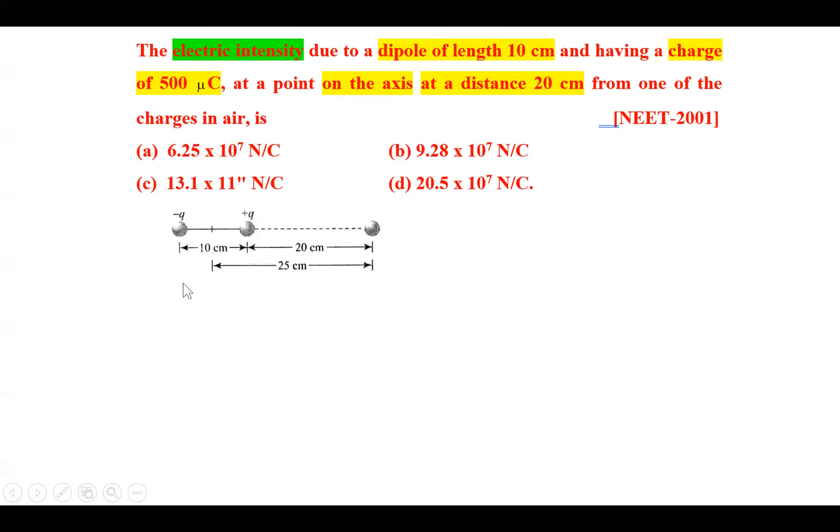Now the situation: the dipole length is 10 cm. We consider the point on the axis of the dipole at 20 cm from this positive charge. This means the point where we need to find electric field intensity is 25 cm away from the dipole's center. We have to find the electric field intensity at a point 25 cm on the axis of the dipole.